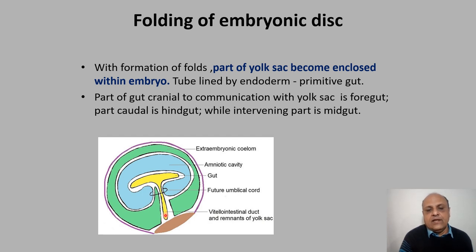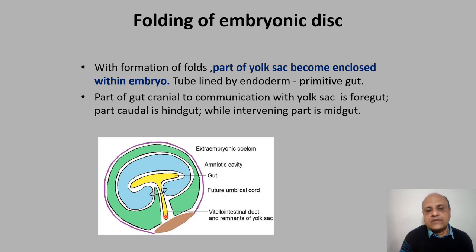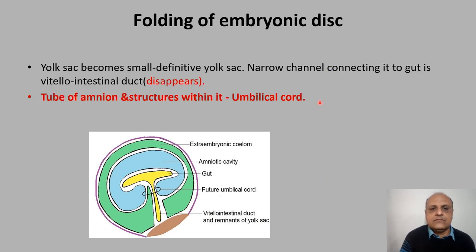The original yolk sac now becomes very small and is called the definitive yolk sac. The communication between the gut tube and the yolk sac is called the vitello-intestinal duct. The yolk sac progressed from primary to secondary and then becomes the definitive yolk sac. The vitello-intestinal duct ultimately disappears.